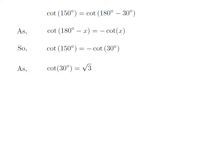We know the value of cotangent of 30 degrees is equal to square root of 3. So cotangent of 150 degrees is equal to minus square root of 3.